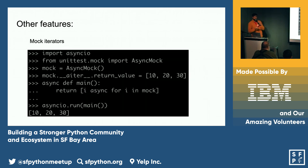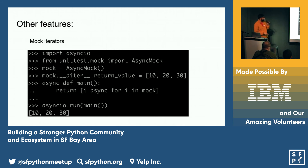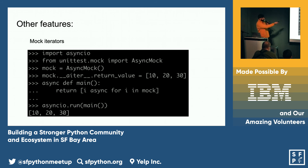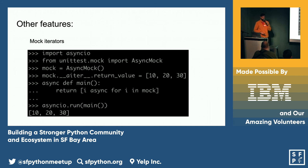You can also mock async iterators. You can initialize a mock and set mock.__aiter__ — the magic method — to return values like 10, 20, 30, and so on. Then in main, if you're doing an async for loop, it will actually do the mocking for you.